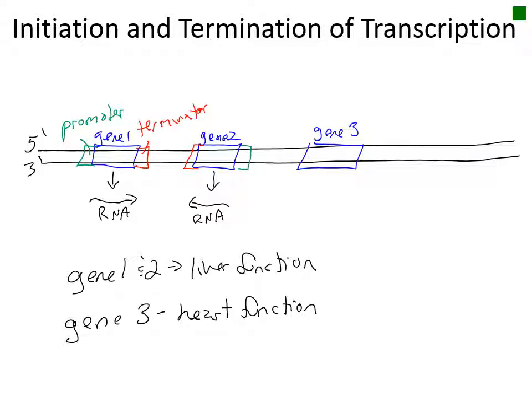If you took the same region of DNA and looked at it in a heart cell, gene 1 and gene 2 would no longer be transcribed because they are not needed for heart cell function. Instead, gene 3 with its promoter and its terminator region would be transcribed into RNA. This process is called the regulation of gene expression.